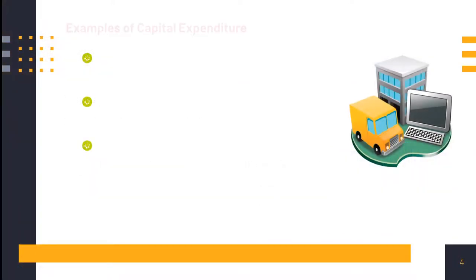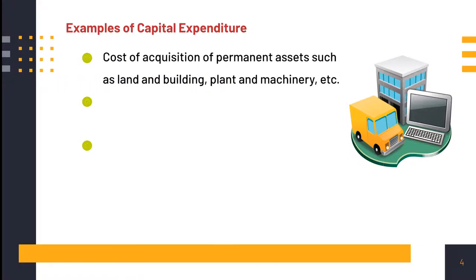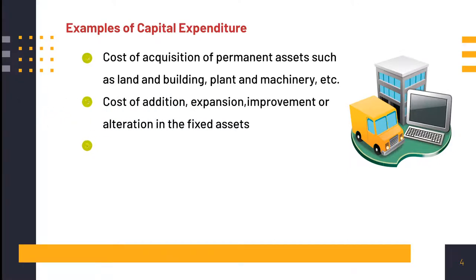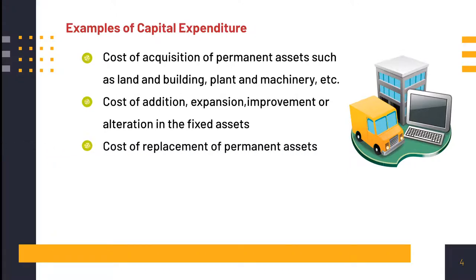Some examples of capital expenditure are: cost of acquisition of permanent assets such as land and building, plant and machinery, etc. Cost of addition, expansion, improvement, or alteration in the fixed assets. Cost of replacement of permanent assets.